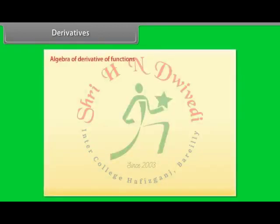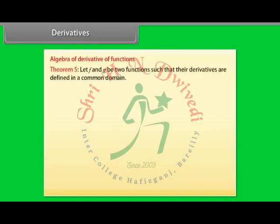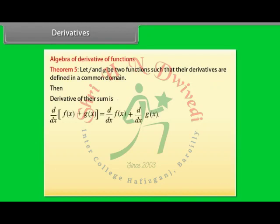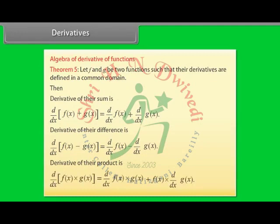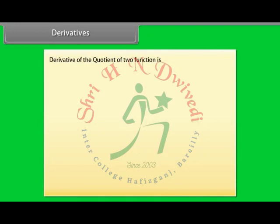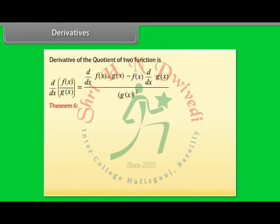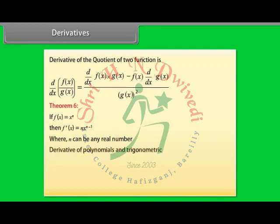Derivatives — Algebra of derivative of functions: Let f and g be two functions such that their derivatives are defined in a common domain. Then: derivative of their sum, derivative of their difference, derivative of their product, and derivative of their quotient. Theorem 6: If f(x) = x^n, then f′(x) = n × x^(n−1), where n can be any real number.